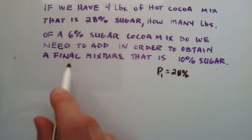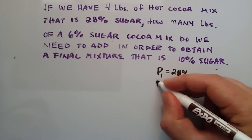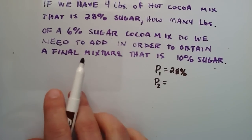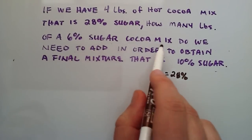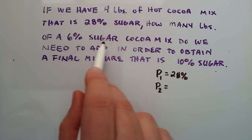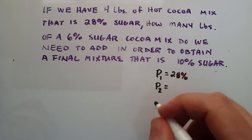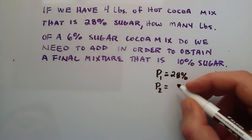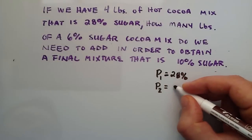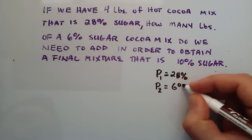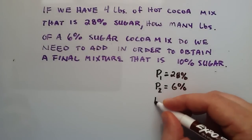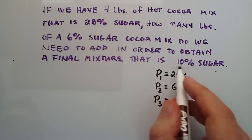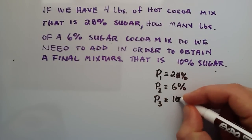Mixture 1 has 28% sugar. Then let's define P2, the percentage of sugar in mixture 2. Mixture 2 would be this cocoa mix, the 6% sugar cocoa mix — that's the one we don't know how much of we're adding yet. P2, the percentage of sugar in mixture 2, is 6%. Then P3 will be the percentage of sugar in the end result, so P3 will be 10%.